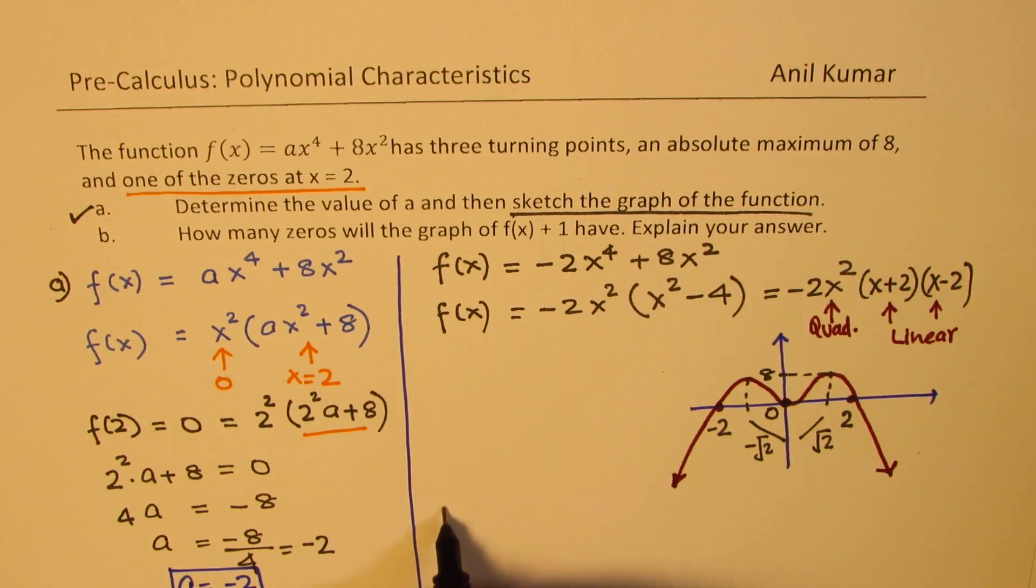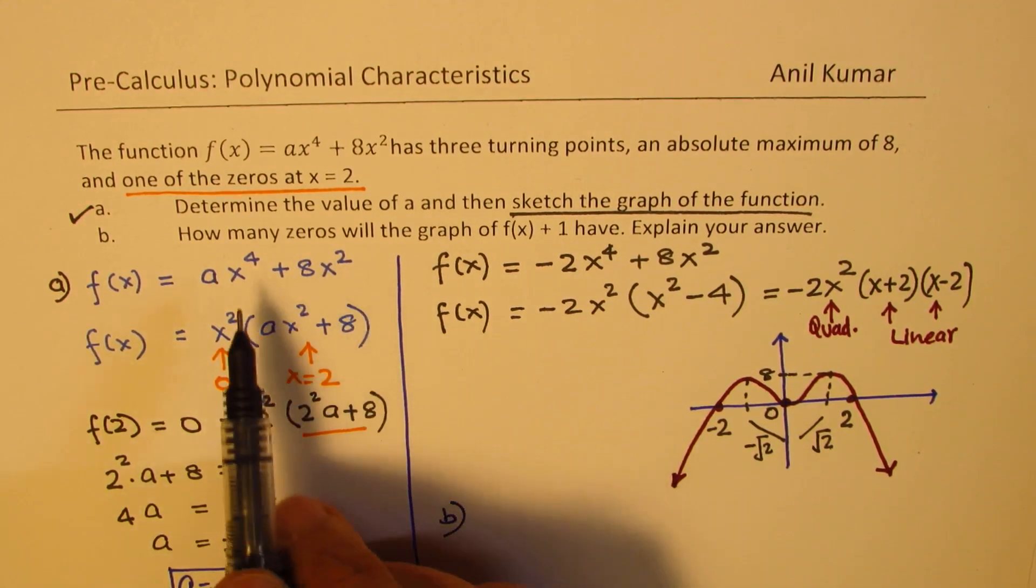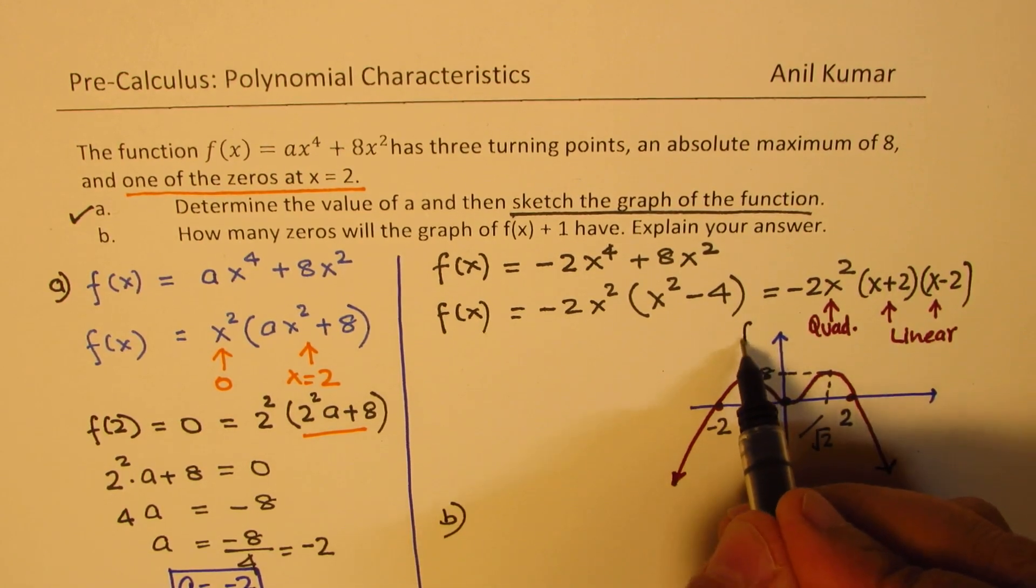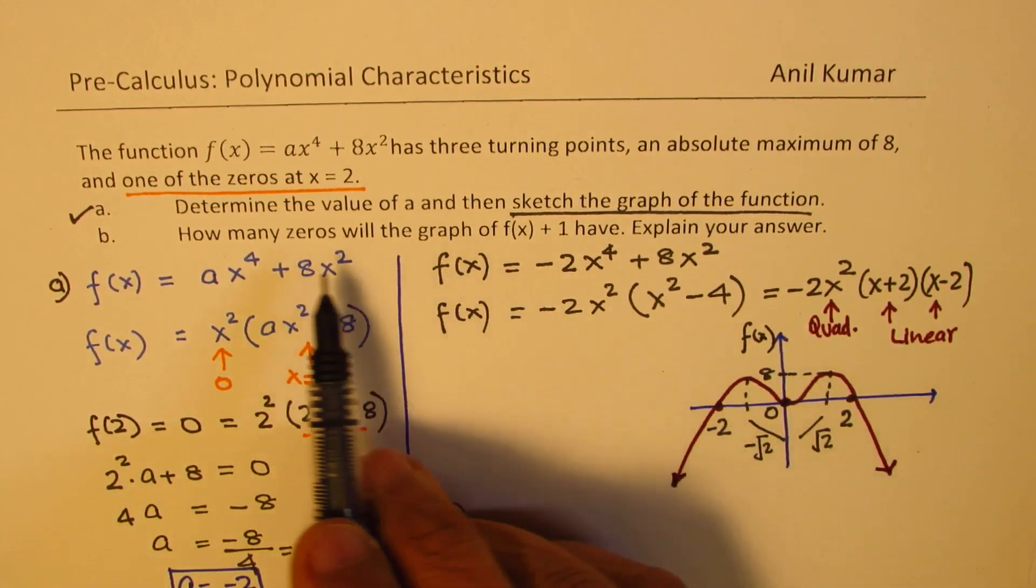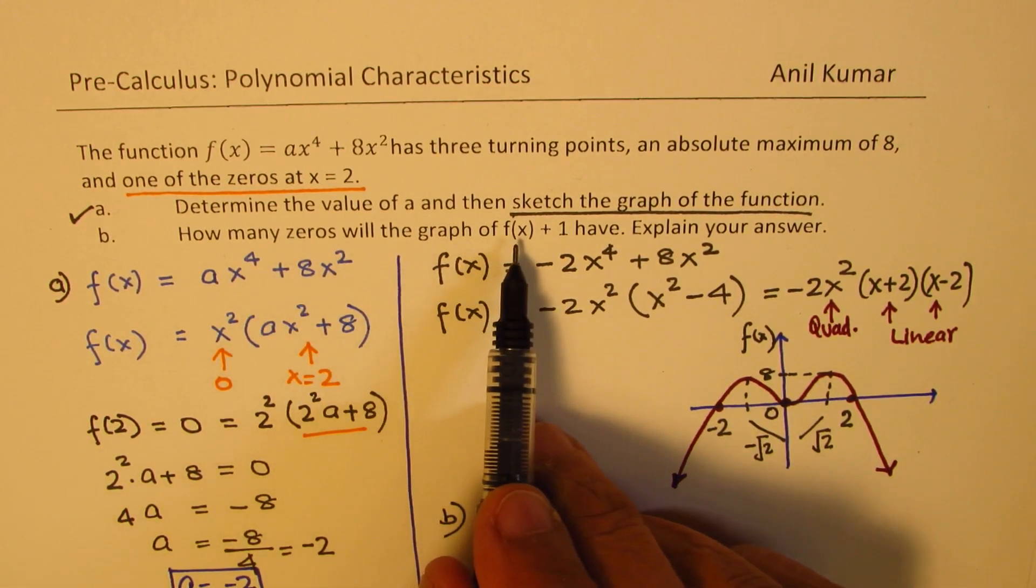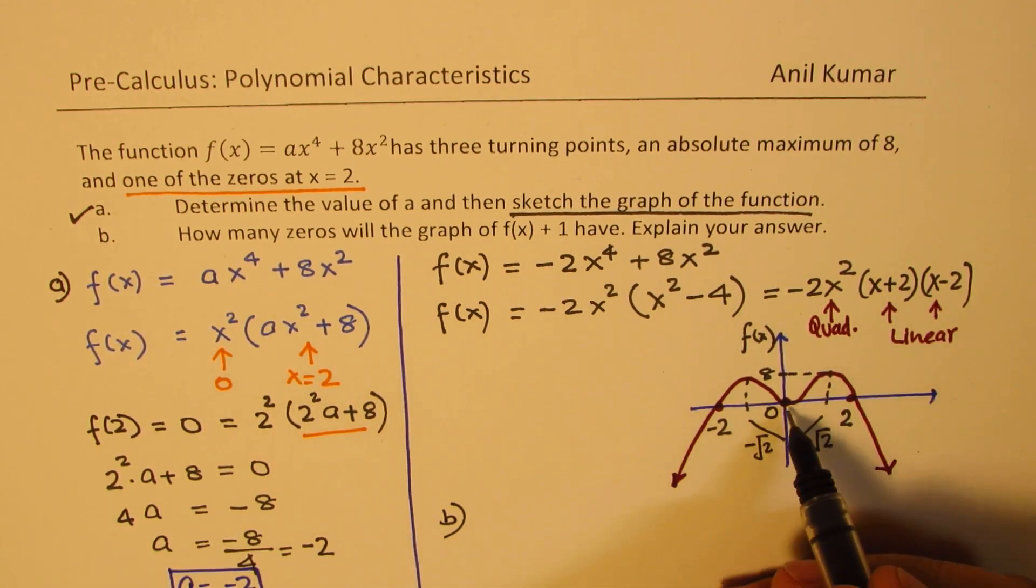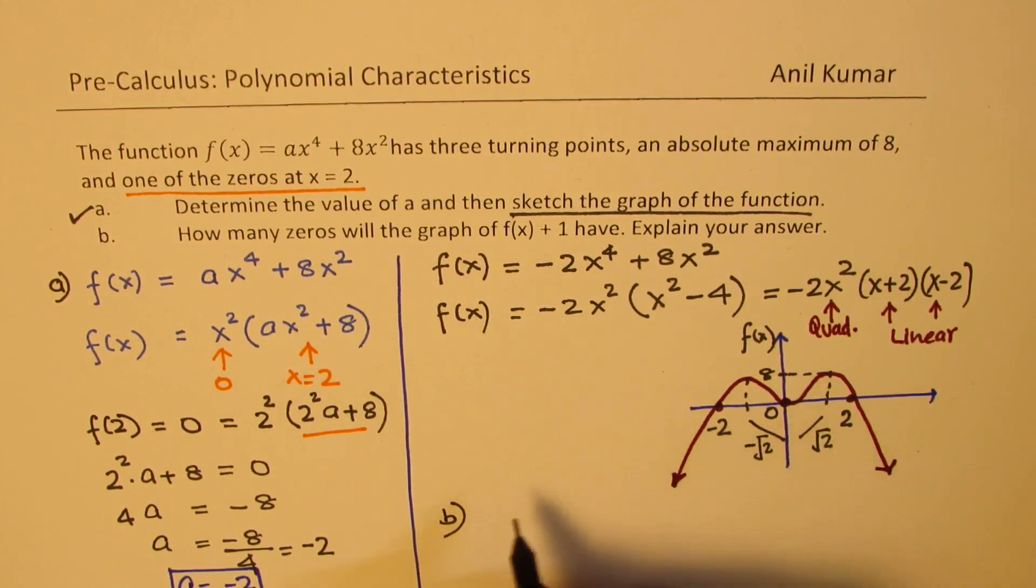Now part B, which is very interesting. It says how many zeros will the graph of, this is the graph of f(x), how many zeros will the graph of f(x) + 1 have? Well, if you push this graph one unit up, you will get only two zeros.